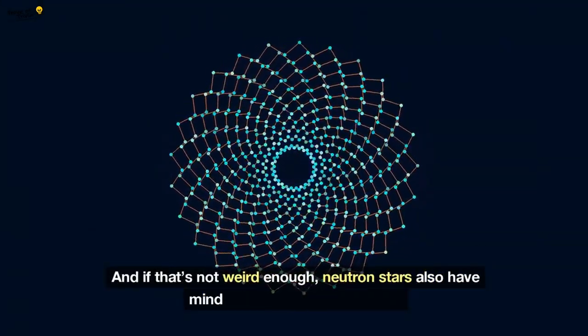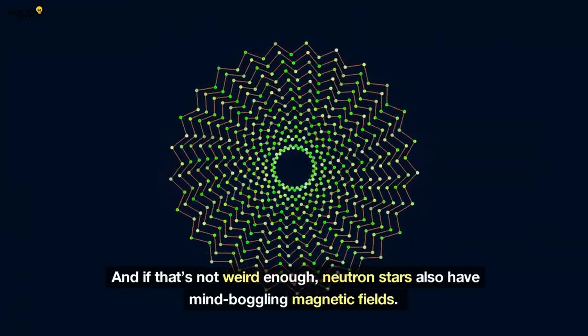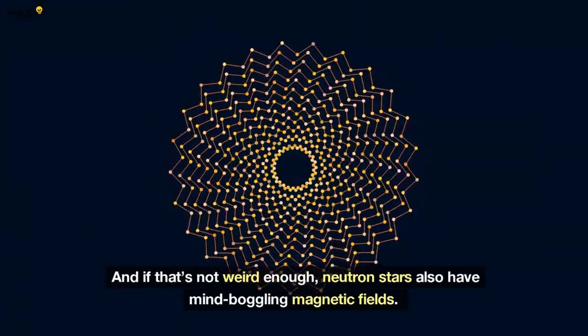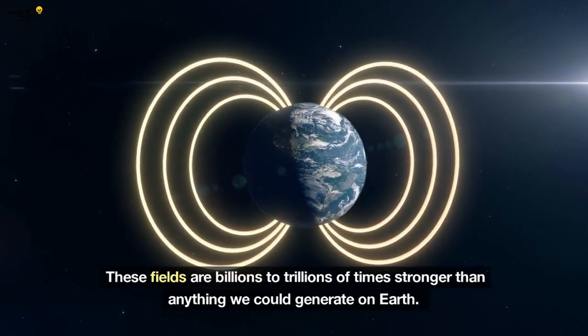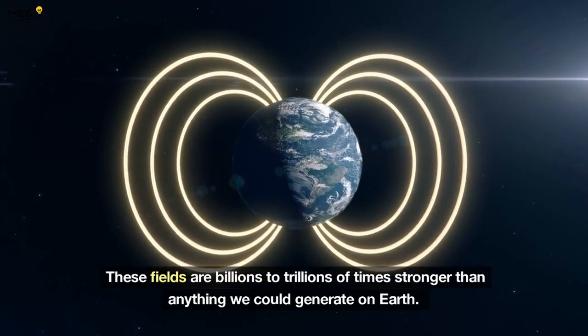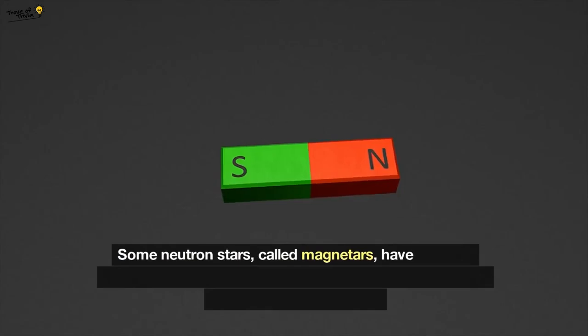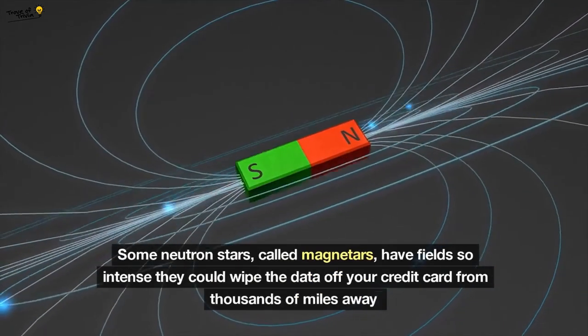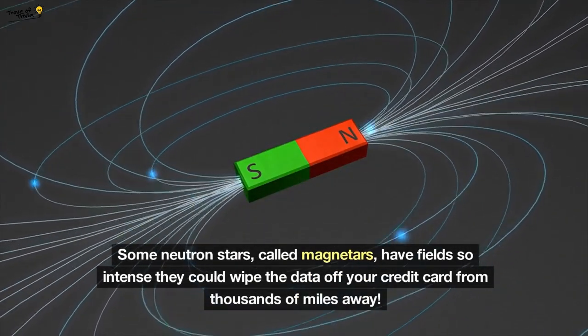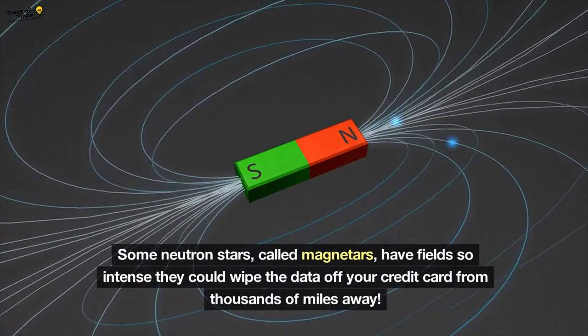And if that's not weird enough, neutron stars also have mind-boggling magnetic fields. These fields are billions to trillions of times stronger than anything we could generate on Earth. Some neutron stars, called magnetars, have fields so intense they could wipe the data off your credit card from thousands of miles away.